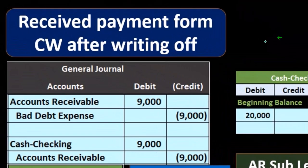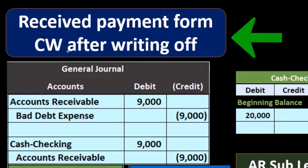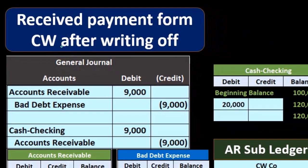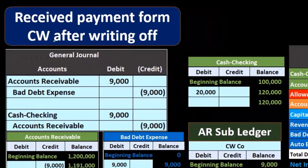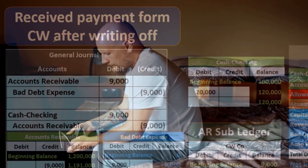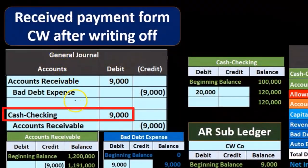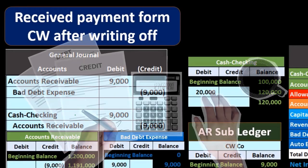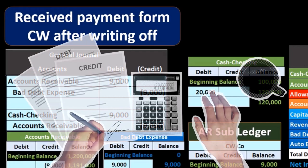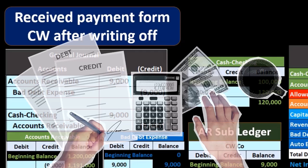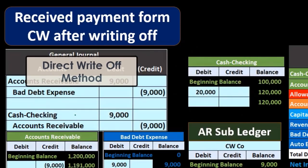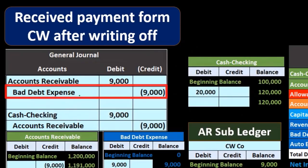So we wrote CW off — we said they're not going to pay us the $9,000. Then they came in, even without our collection actions. We gave up collecting the money, and they came in and paid us, which is great. You would think we'd debit cash and credit some other account, but we couldn't credit accounts receivable because we already wrote it off — in this case, under the direct write-off method, to bad debt.